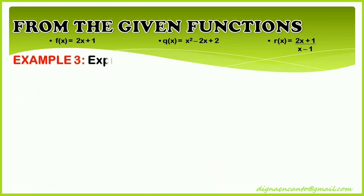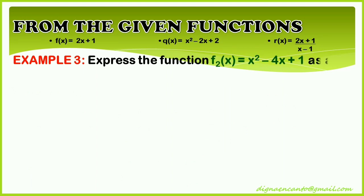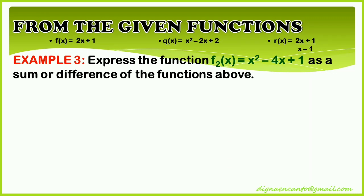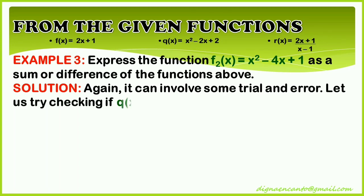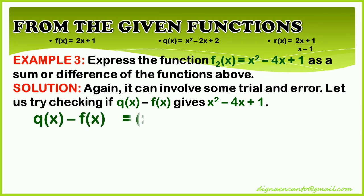Example 3: express the function f sub 2 of x equals x squared minus 4x plus 1 as a sum or difference of the functions above. For the solution, again it can involve some trial and error. Let us try checking if q of x minus f of x gives x squared minus 4x plus 1.